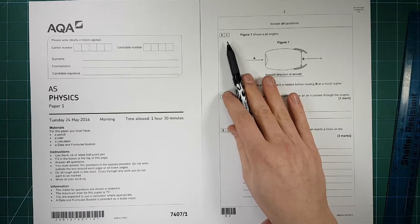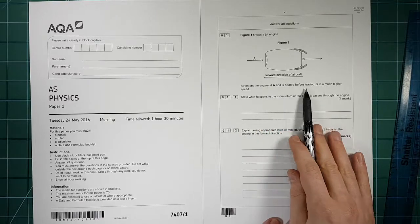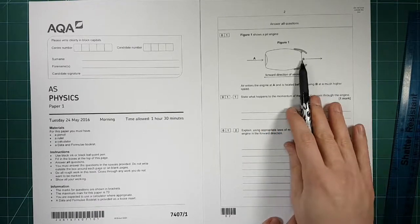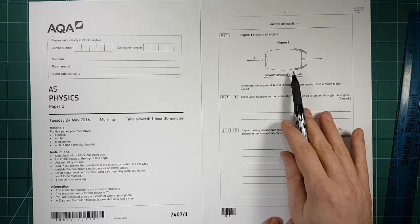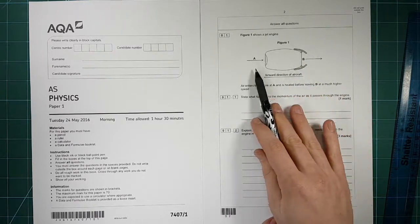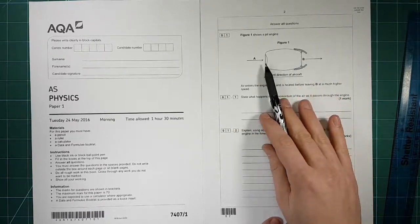So onwards and upwards then question one. The figure shows a jet engine, the air enters at A before it's heated inside and it leaves B at much higher speed. Lots of students when they first saw this exam were a bit confused by this because they'd never met this particular type of jet engine before or any jet engine.